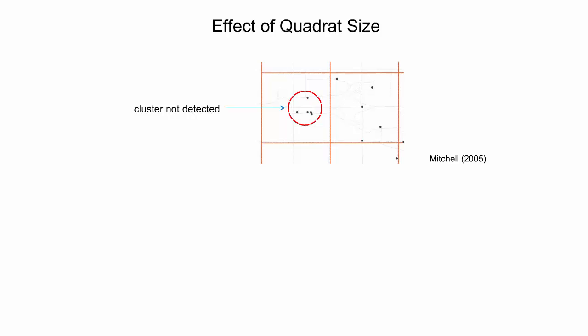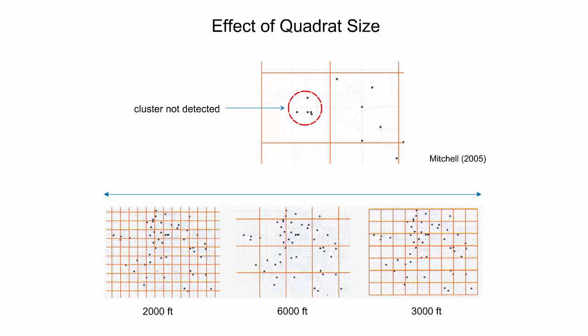In quadrat analysis, the quadrat size will affect whether any patterns can be identified. The goal is to choose a size large enough to capture any pattern but not so large it obscures it. A too-large quadrat size may result in quadrats with about the same number of points, obscuring the pattern. A too-small quadrat size may lead to many quadrats having few or no points, which is not useful as a description of pattern variability. It is common to search over multiple quadrat sizes to discern whether a pattern exists at some scales and not others.